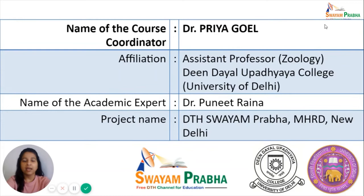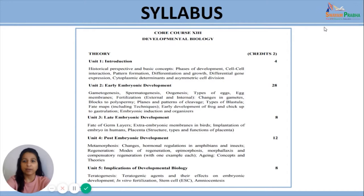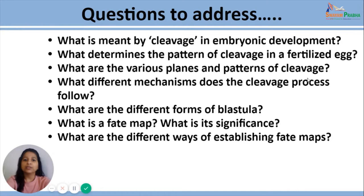This is the syllabus of Developmental Biology that we are following. Today we are going to discuss the planes and patterns of cleavage, the types of blastula and the fate maps. In today's lecture we will discuss what is meant by cleavage in embryonic development, what determines the pattern of cleavage in a fertilized egg, the various planes and patterns of cleavage, the different mechanisms the cleavage processes follow, the different forms of blastula, the fate map and its significance, and the different ways of establishing fate maps.